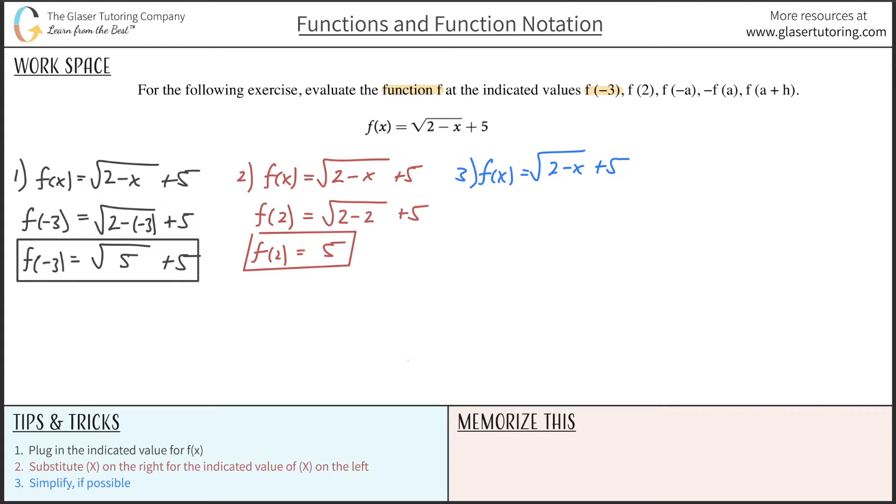So the next one they want us to evaluate it at is f of negative a. Now don't worry. This is done exactly how you've been doing it before. It's just instead of a number, it's a letter. But who cares? So everywhere you see x on the right-hand side, substitute in the indicated x value on the left, which is negative a. So this is going to be 2 minus negative a plus 5.